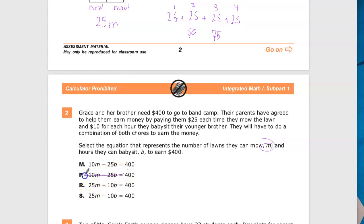See, this nonsense here, nope. This nonsense here, nope. Because m represents mowing the lawn, and that's the only thing they get paid $25 for. So, it has to be either this or this.